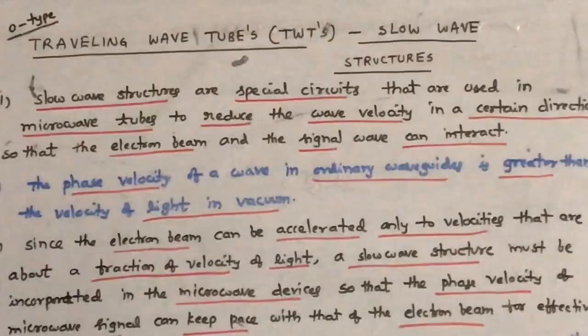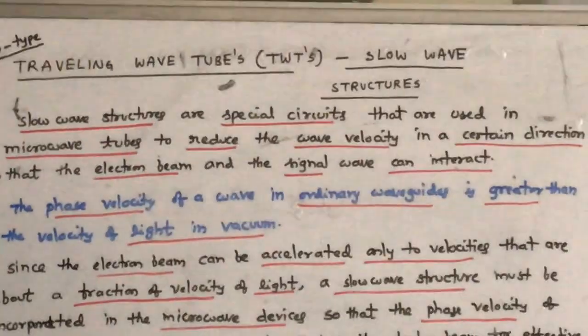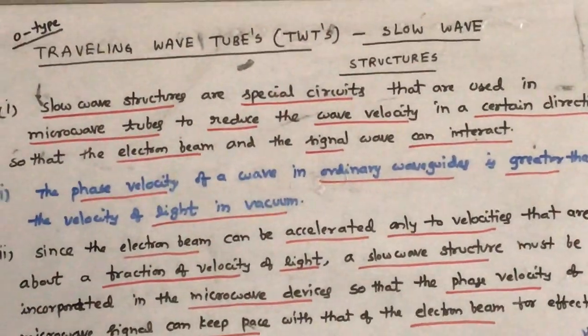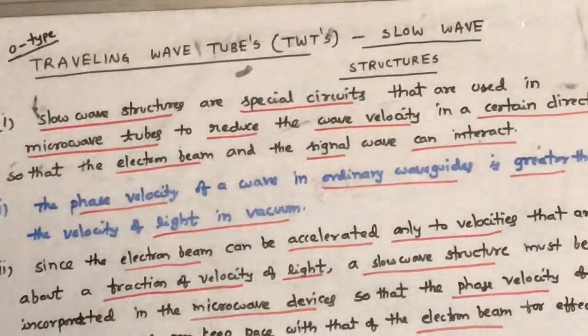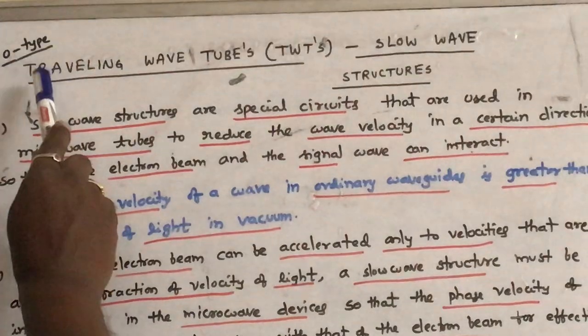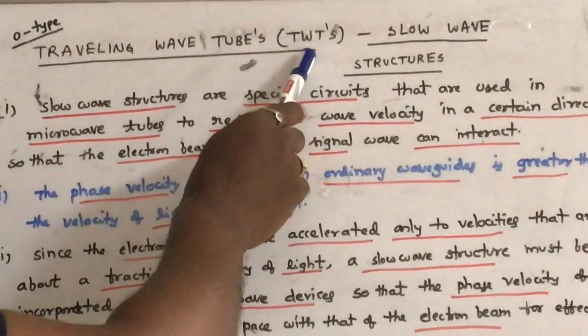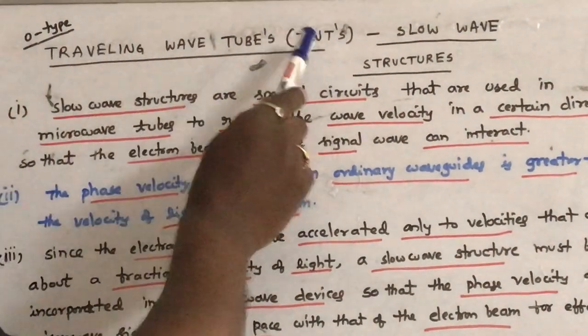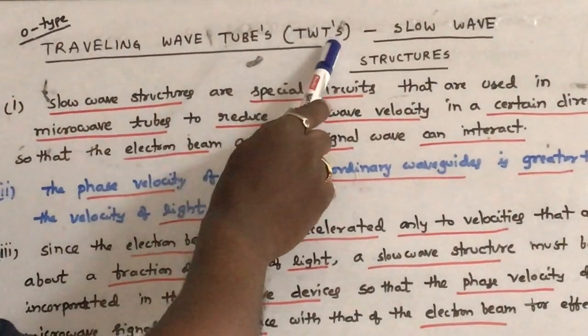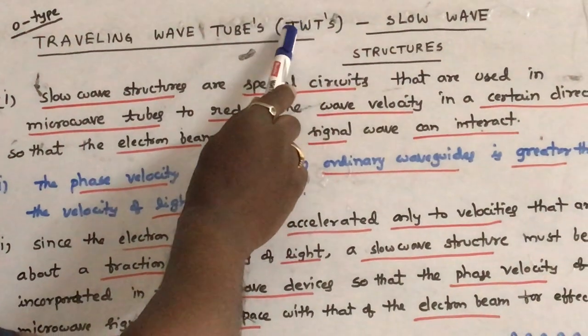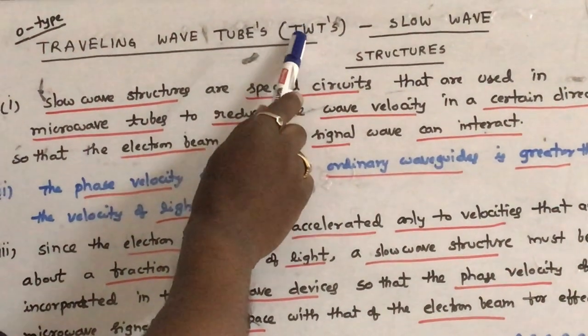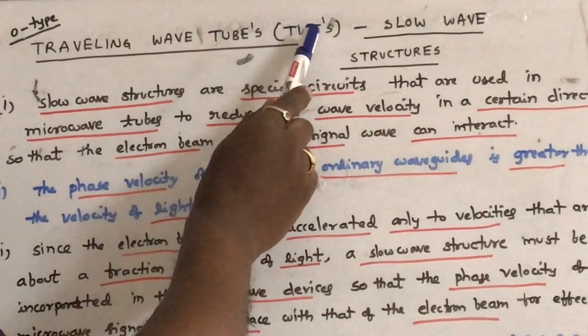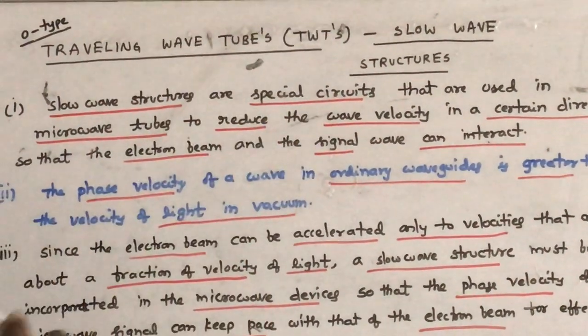Hi, welcome to the series of video lectures on microwave engineering. Today we will discuss travelling wave tubes. In short, they are called as TWTs. TWTs stands for travelling wave tubes.